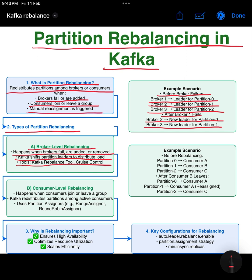B: consumer-level rebalancing. This happens when consumers join or leave a consumer group. Kafka redistributes partitions among active consumers using partition assigners, such as the range assigner or round-robin assigner.